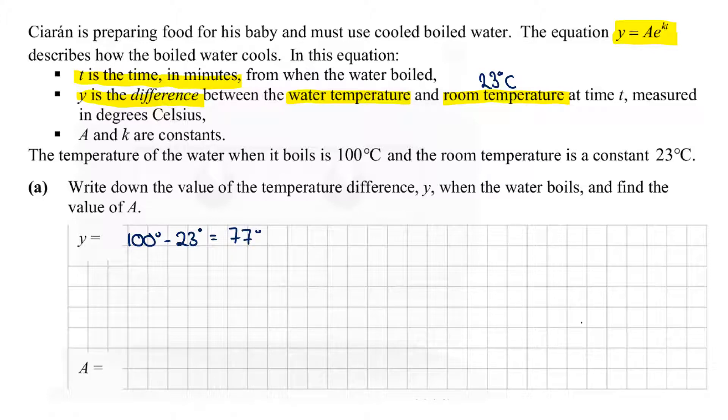To work out A, we go to our equation: y equals Ae to the power of kt. When the water boils, we know that y is 77. E is to the power of k and t, and the time when the water boils is zero. The first bullet point says t is the time in minutes from when the water is boiled, so when we boil the water, no time has passed. We get 77 equals Ae to the power of zero, and anything to the power of zero is just one. So A equals 77.